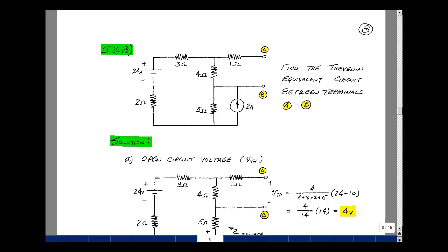This lesson deals with supplemental problem 3.8. You can find this problem in the ECE 201 ebook in the Chapter 3 Supplemental Problems on page 8. Given this circuit, could you find the Thevenin equivalent between terminals A and B?